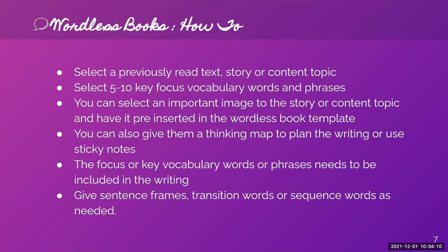Wordless Books — how to. These are the directions for doing the activity. You select a previously read text, story, or content topic. Select 5 to 10 key focused vocabulary words and phrases. You can select an important image related to the story or content topic and have it pre-inserted in the Wordless Book template. You can also give students a thinking map to plan the writing, or use sticky notes if needed. The focus or key vocabulary words or phrases need to be included in the writing. You give sentence frames, transition words, or sequence words as needed.